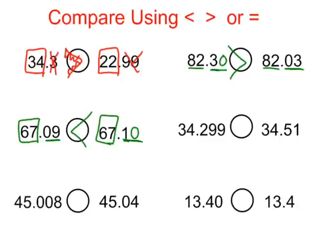On the next one, we have again two whole numbers that are the same. We have one decimal that's in the thousandths and one in the hundredths. So I'm going to go ahead and add a zero — it doesn't change its value — and then it just makes it so much easier to compare the two numbers. This is 510 thousandths. This is 299 thousandths. So this would be larger.